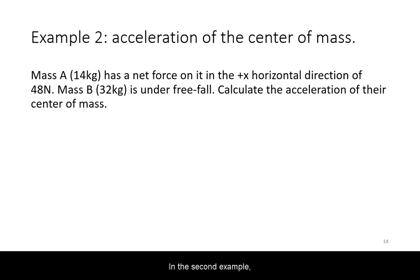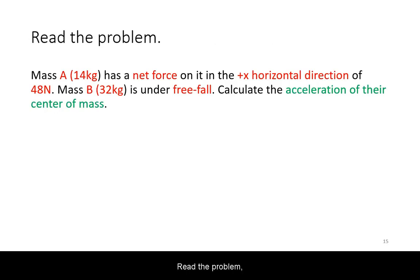In the second example, we will calculate the acceleration of a system of two objects, each with different net force on them. Read the problem, this time paying attention to forces as well. Note that, in this case, free-fall refers to a mass being under the force of gravity only. Hence, the net force on it will be calculated as mass times gravitational acceleration g.